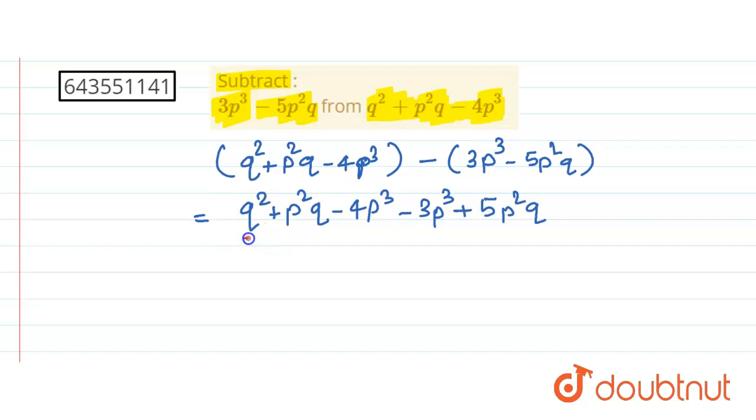See this q2 we do not have any group, so let us keep this as it is. This is q2 plus we have p2q and 5p2q just group them, p2q plus p2q is there plus 5p2q.